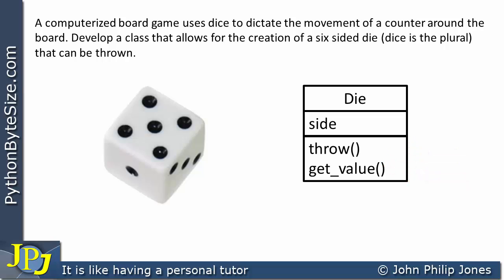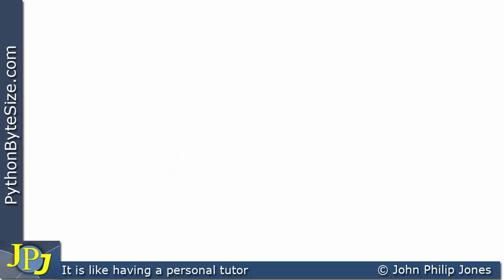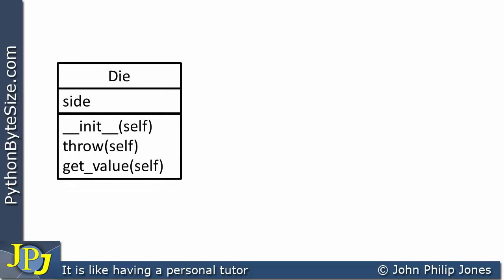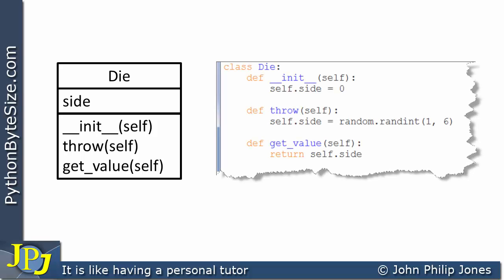When we move over into coding, the attribute becomes a variable and the behaviours become methods. Let's now revisit the class diagram from the perspective of Python programming. There is an alteration: I have included the initialisation method, which we've looked at previously in the playlist. You can also see that the word 'self' has been included in these two methods, as well as in the initialisation method.